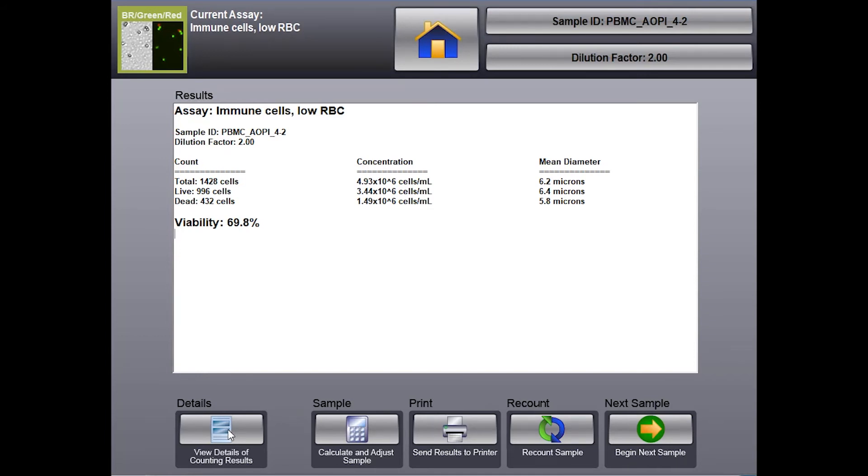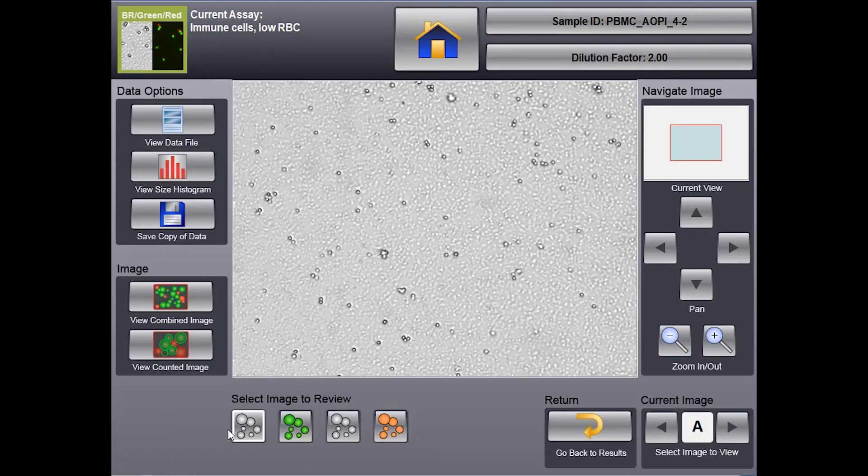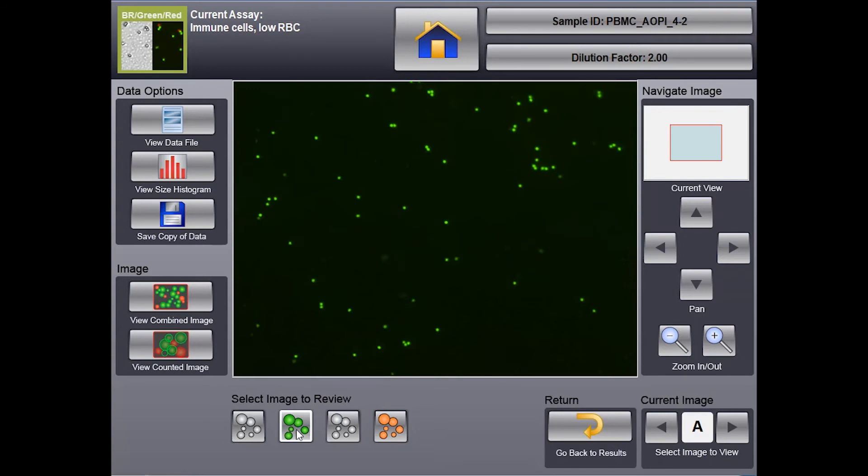You can click on view count details to look at your images. When you do that, you'll want to select the green fluorescent image and then click on view counted image on the left hand side of the screen. Zoom into the screen if you need to and all of the cells that are counted will be circled in green.